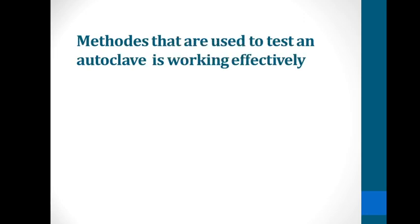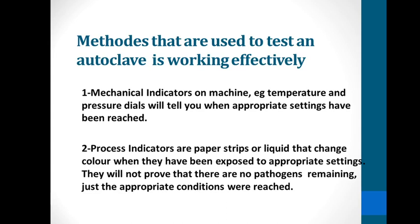There are methods used to test whether an autoclave is working effectively. The first is mechanical indicators: temperature and pressure dials on the machine tell you when appropriate settings have been reached. The second is process indicators: paper strips or liquid that change color when exposed to appropriate settings, though they do not prove that no pathogens remain — only that the appropriate conditions were reached.